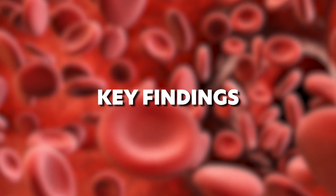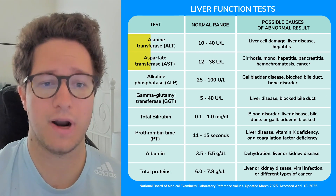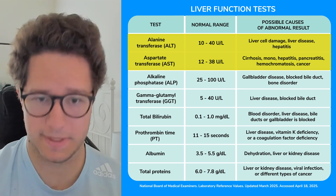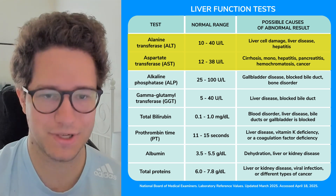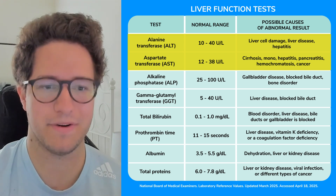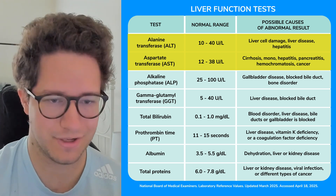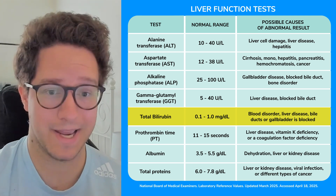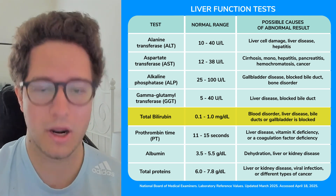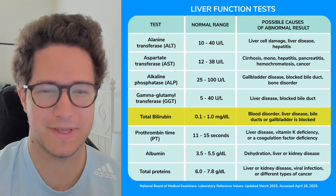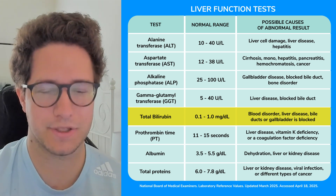Let's talk about interpretation — what do abnormal CMP values actually mean? For elevated AST and ALT, these liver enzymes are nonspecific, but they can indicate liver injury from ischemia, hepatitis, or medications. Bilirubin is what makes your skin yellow, also known as jaundice. Elevated conjugated bilirubin is usually worse, because it means the liver isn't properly excreting bile.